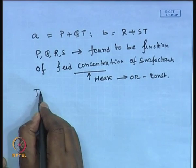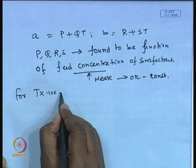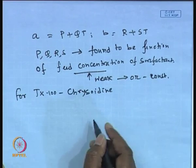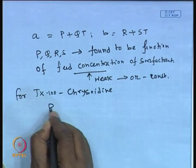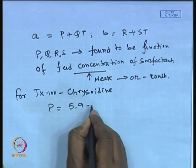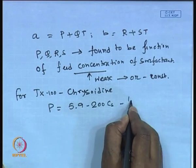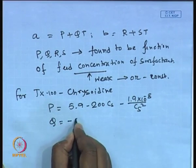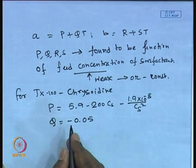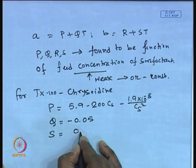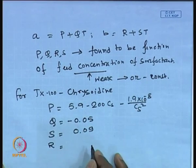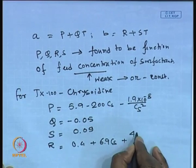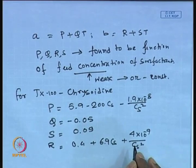For the TX-100/chrysoidine system, the correlations are: p = 5.9 − 200Cs − 1.9×10⁻⁸ Cs², q = −0.05, s = 0.09, and r = 0.4 + 6.9Cs + 4×10⁻⁹ Cs². These are the functional relationships for the various process parameters including surfactant concentration, temperature, pH, and electrolyte concentration.